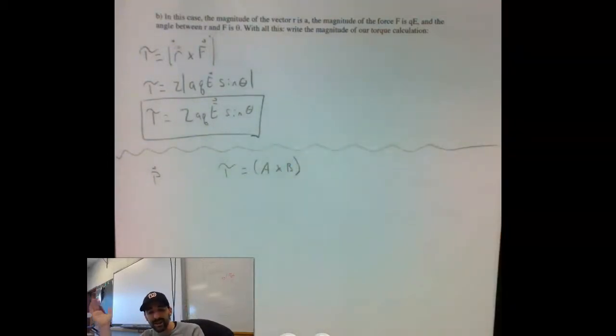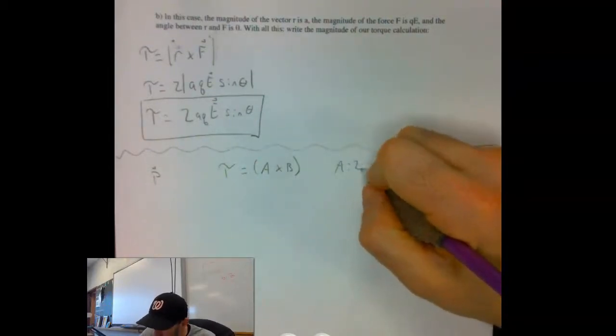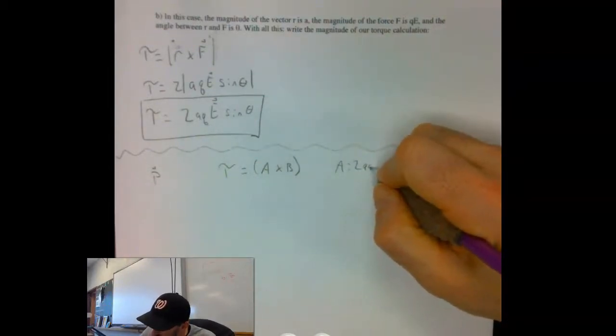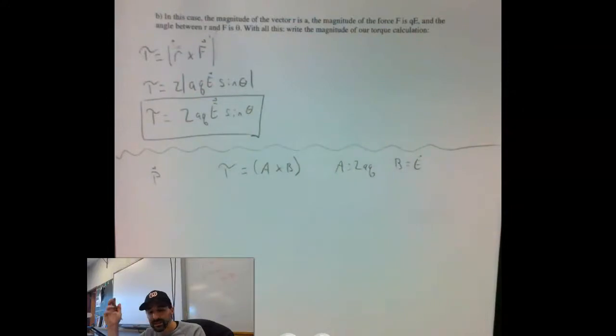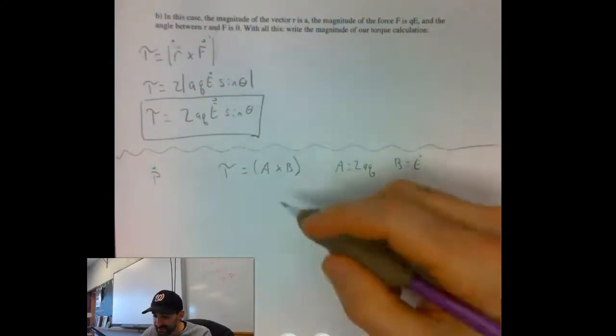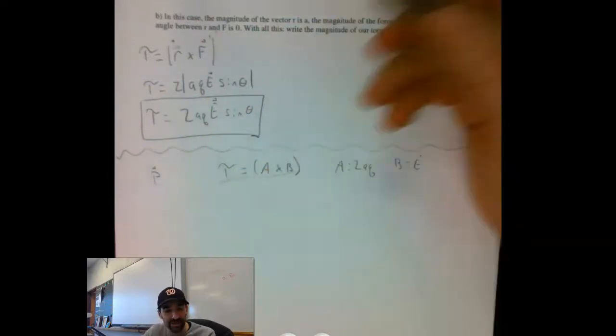100%. Now in this last one, we had A was equal to two times A times Q, and our B was equal to the electric field. So this is our general expression, and we can have easily just started with torque and backtrack to get into that one.